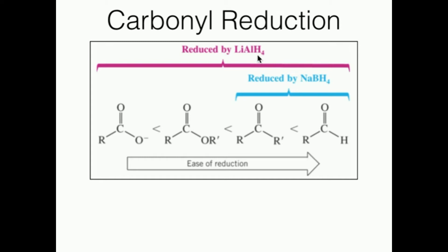One way to recognize these two reagents: they all have a bunch of hydrogens — LiAl then H4, and NaB then H4. So they have hydrides and can donate those hydrides. Because sodium borohydride is a weak reducing agent, it's only able to reduce a few functional groups — specifically ketones and aldehydes. Sodium borohydride is kind of like the PCC of reducing agents: it's the weaker one and only does ketones and aldehydes.